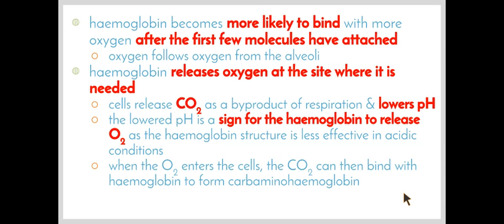The third advantage is that hemoglobin releases oxygen at the site where it is needed. Red blood cells have no nucleus, so how do they know where to release the oxygen? Cellular respiration produces carbon dioxide as a byproduct. This diffuses out of the cells and into the blood, where it dissolves in the plasma and reduces the pH, making the blood more acidic. The lowered pH is a signal for the red blood cells to release oxygen, because the structure of hemoglobin is less effective when the pH of its surroundings is lower.